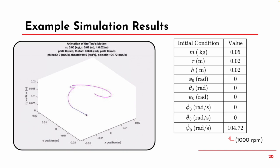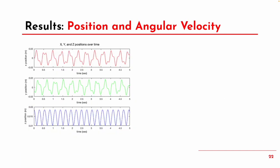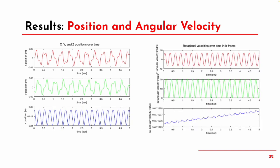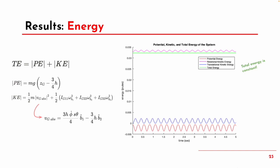Next, we are looking at example simulation results. To the right, you can see the initial conditions used. We can see the x, y, and z positions over time of the top, as well as changes to the angular velocity. In the B3 direction, we see what looks like an increase in overall angular velocity; however, this is an integration error when looking at the actual scale of that plot. To validate our simulation, we looked at total energy. The equations for potential and kinetic energy are shown to the left, and to the right we can see that the total energy remains constant for the entire simulation, which is what we'd expect.